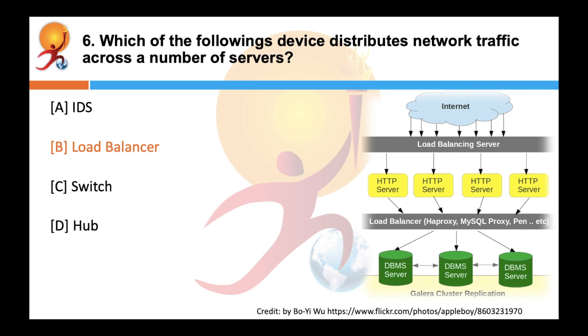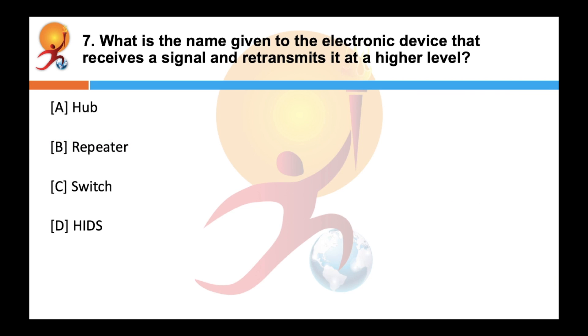Load balancers are used to increase capacity and reliability of the applications. What is the name given to the electronic device that receives the signal and transmit it at higher level? Correct answer is a repeater. Repeater is an electronic device that receives a signal and retransmits it at a higher level onto the other side of an obstruction so that the signal can cover longer distances. This is typically seen in large houses or offices wherein a wall can create an obstruction for the wifi network.